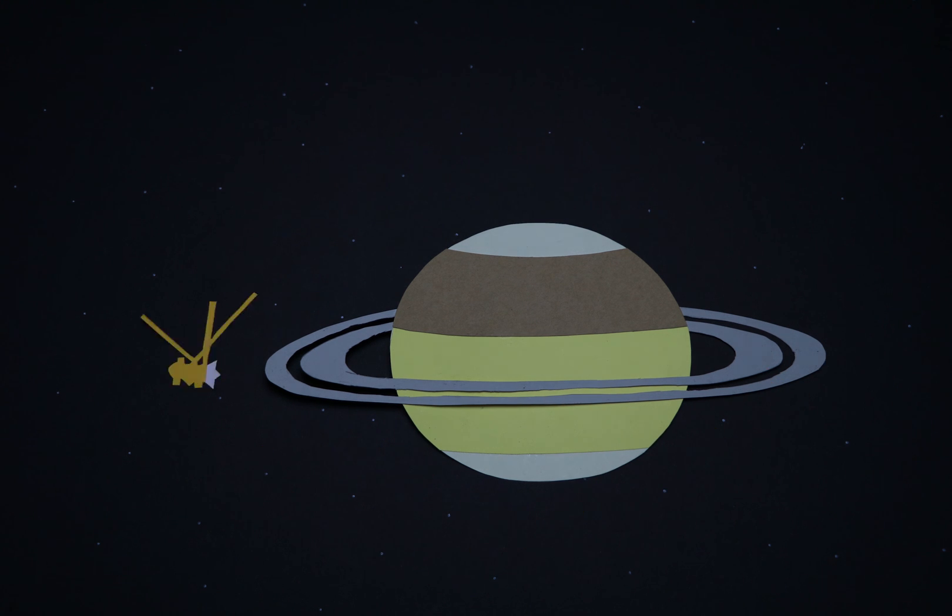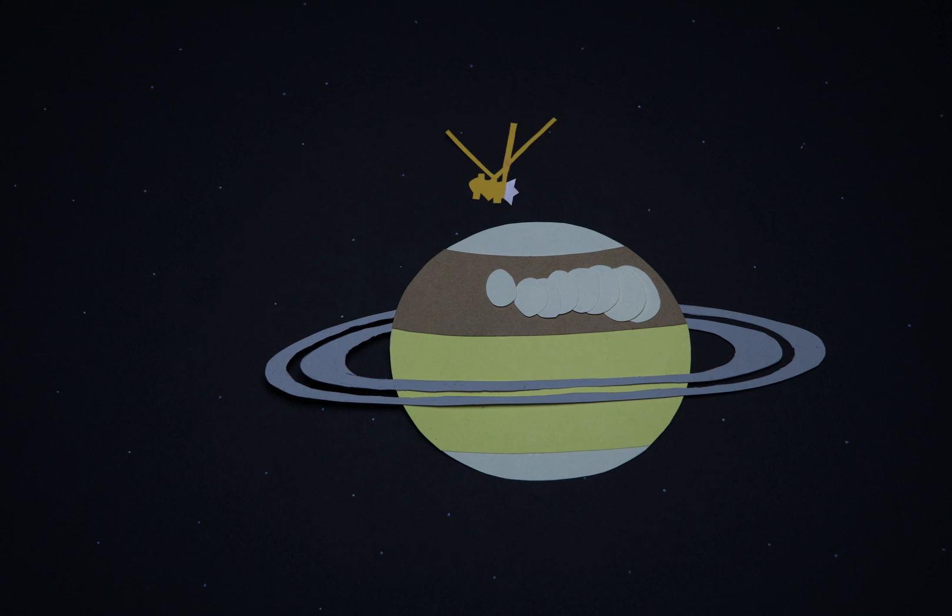Cassini also liked to study Saturn itself and, in 2010, saw something strange begin to form on the planet. The Great White Spot is a massive storm on Saturn that forms periodically and then disappears. Cassini was able to study this storm in greater detail than anything before.